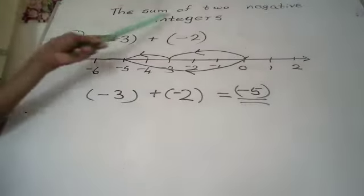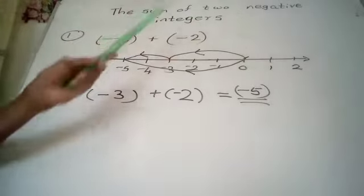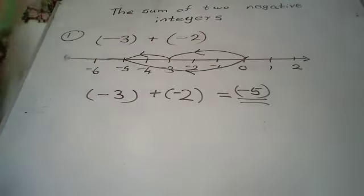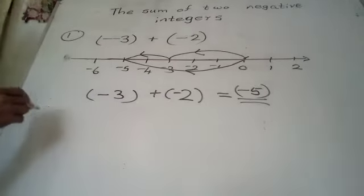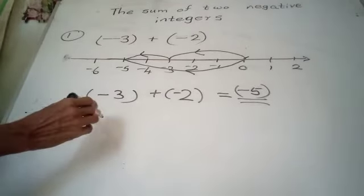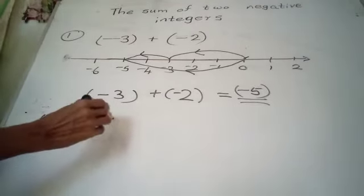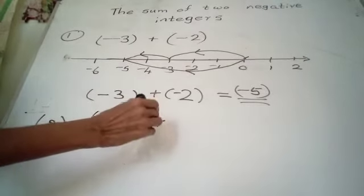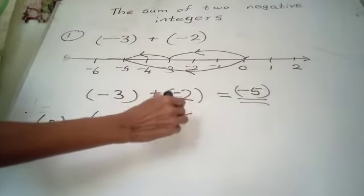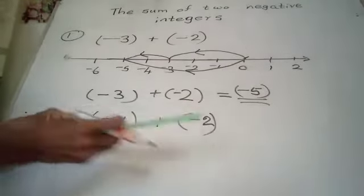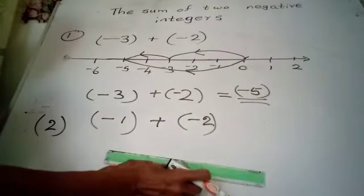Now for a second example — the sum of two negative integers using the number line. Let's find negative 1 plus negative 2. We draw a number line.